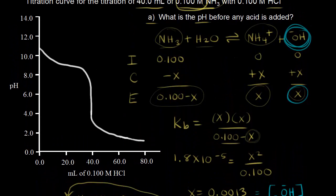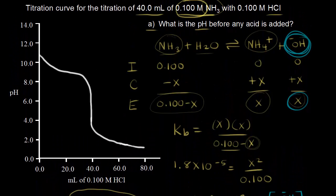On the titration curve, at 0.0 milliliters of acid added, the pH should be 11.11, so that point is right here on the curve.